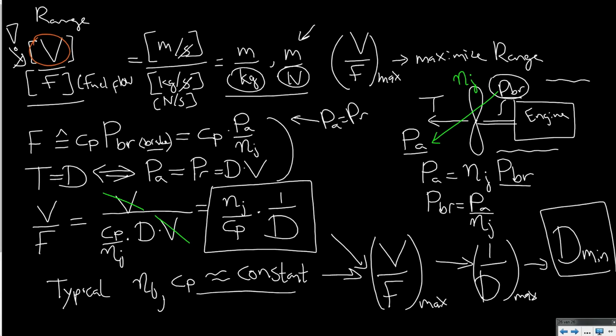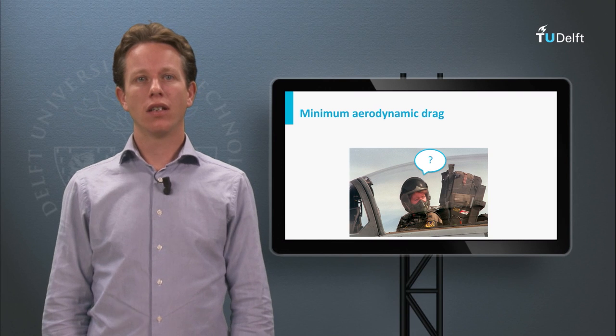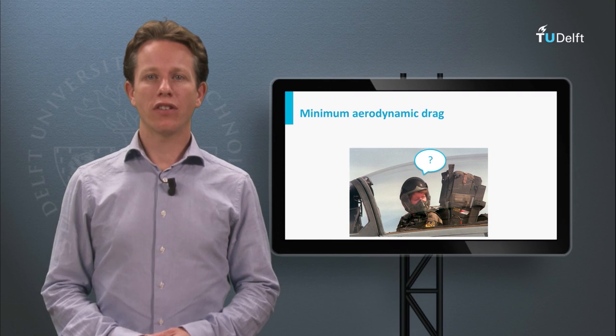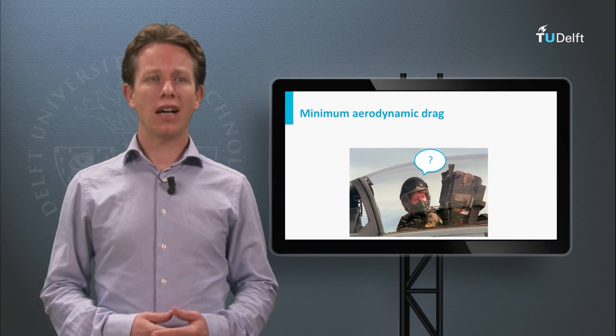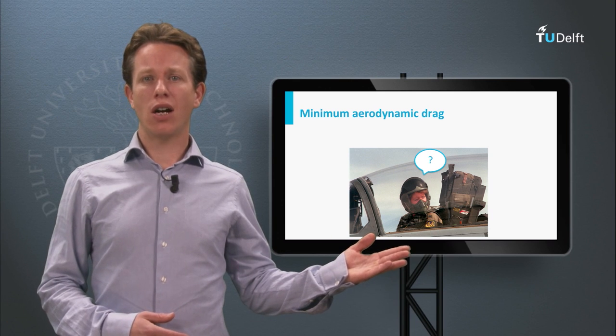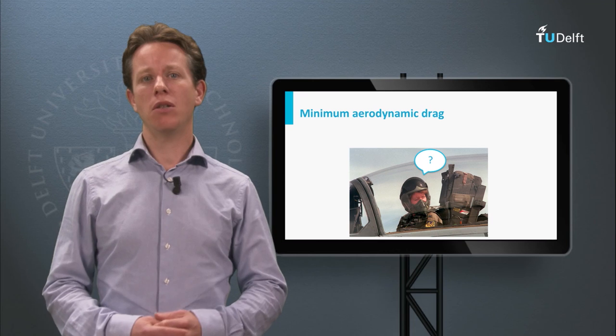Now, that seems like quite a reasonable result, right? In order to get maximum range, we need to have minimum aerodynamic drag. Intuitively, you can see that this is a feasible result, and we will see now in the lecture what that means for the performance of the Spirit of St. Louis. However, we are not done yet. This, of course, is a nice result that you have to fly at minimum drag, but how should this pilot know how he or she is flying at the minimum drag condition?